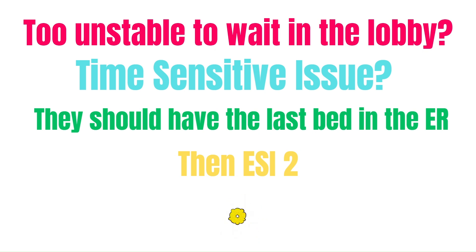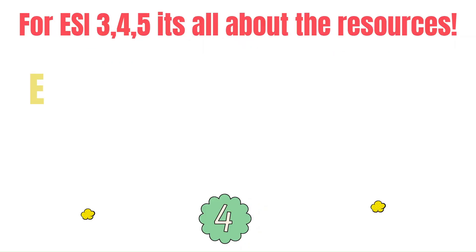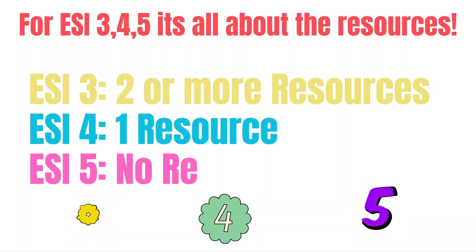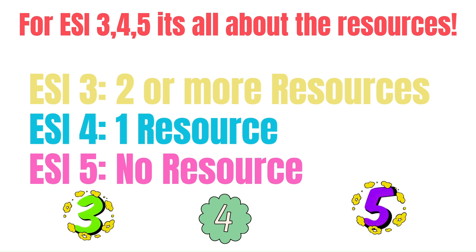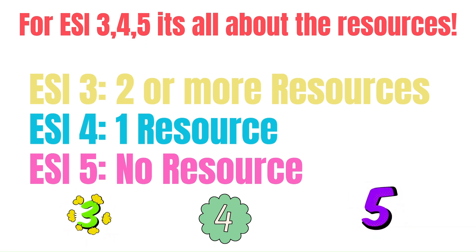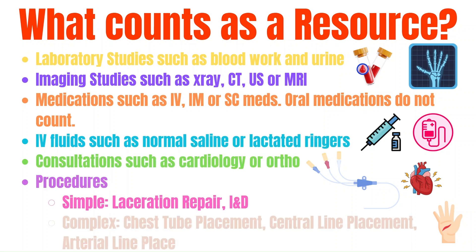To differentiate between ESI 2 and ESI 3, ask yourself: would I be comfortable with this patient going back to the lobby, or should they get my last bed in the ER? If you're not comfortable due to a vital sign or something time-sensitive, they're most likely ESI level 2. When it comes to ESI levels 3, 4, and 5, focus on the resources. An ESI level 3 patient will require 2 or more resources — they have a complaint requiring in-depth evaluation but are stable and safe to wait. An ESI level 4 requires only 1 resource, and an ESI level 5 requires no resources. Remember: resources are lab studies, imaging studies, most medications, IV fluids, consultations, and procedures.